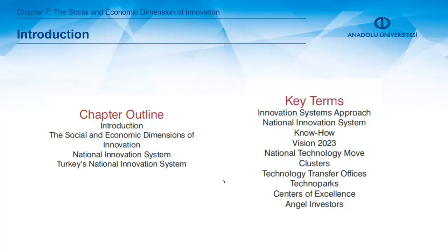The key terms in this chapter include innovation system, systems approach, and national innovation system — all related to knowledge creation and concepts like know-how, know-what, and know-why. We also cover Turkey's Vision 2023 strategy, and the national technology model announced by the Minister of Technology and Industry in September 2019. Components of Turkey's national innovation system such as clusters, technology transfer offices, technoparks, centers of excellence, and angel investors are all key terms found in this chapter.